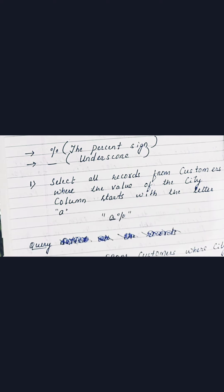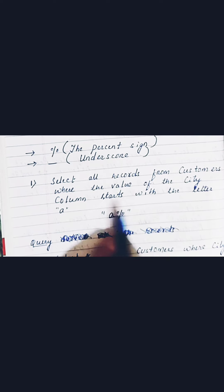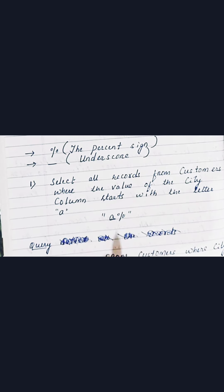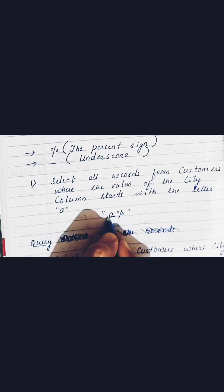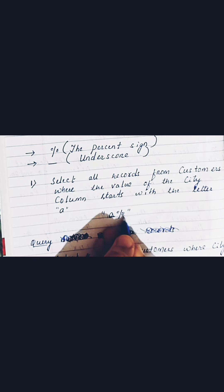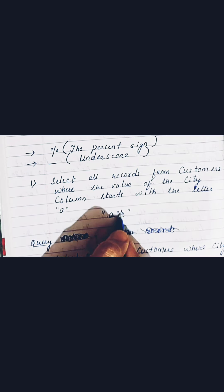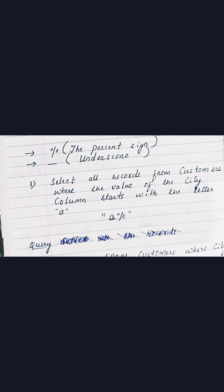Starting with the first question: select all the records from the customer table where the value of the city column starts with the letter 'A'. Since the starting letter is 'A' and we don't know how many letters follow or what they are, we use the percent sign. The query is: SELECT * FROM customers WHERE city LIKE 'A%'.